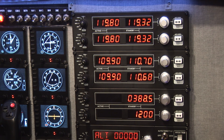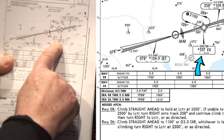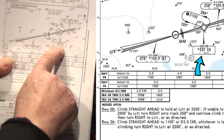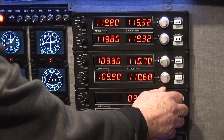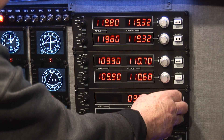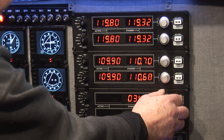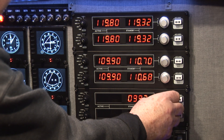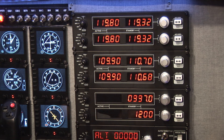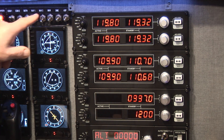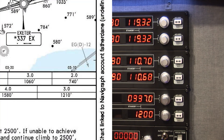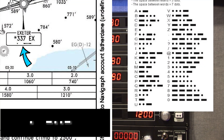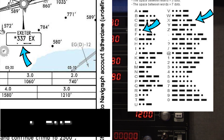There is also a beacon here on frequency 337. So if we change the ADF to 337 — there we go, 337.0. That's the ADF. Over here is the sound for the ADF — let's listen in. That matches right here.